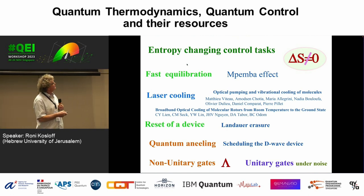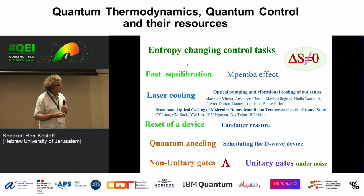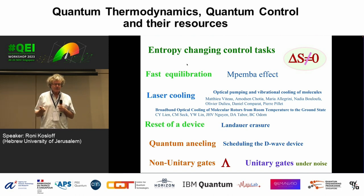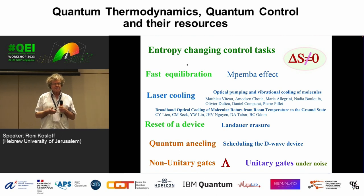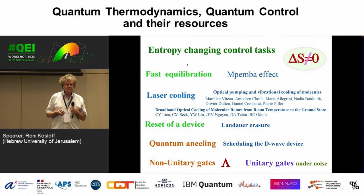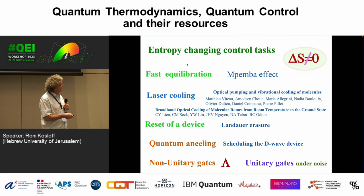Examples of problems we want to address: fast equilibration — resetting a computer as fast as possible. This is called the Mpemba effect because a person in Tanzania wanted to cool his popsicles and found that using hot water instead of cold water makes them freeze faster. We can think about how to control a reset, laser cooling, quantum annealing, and gates — these are the tasks I want to discuss.